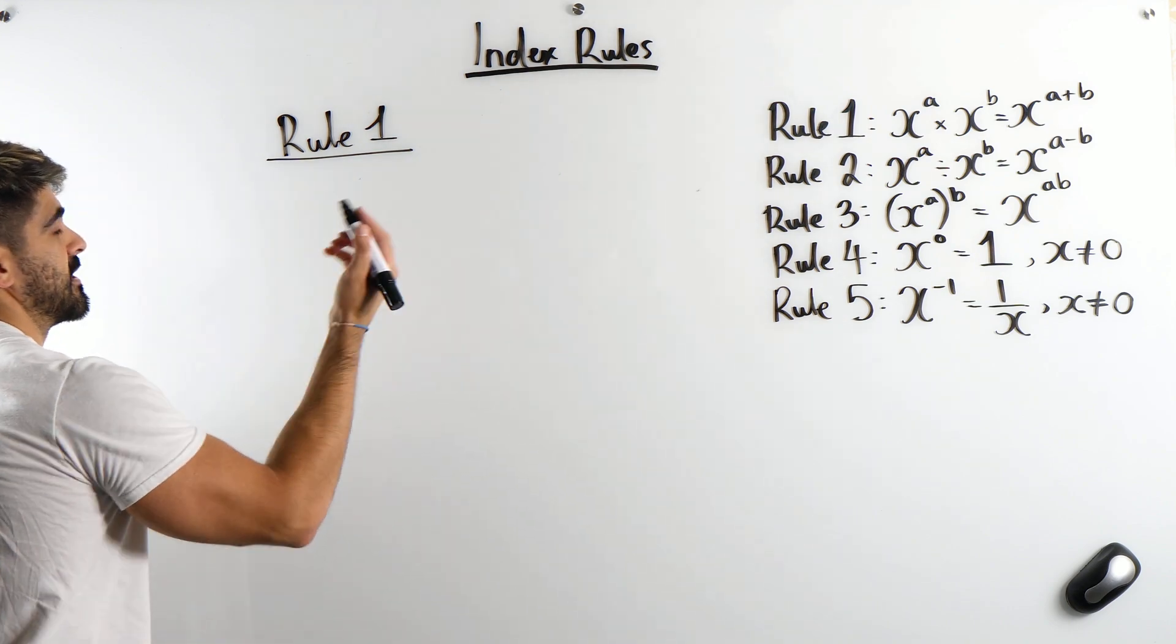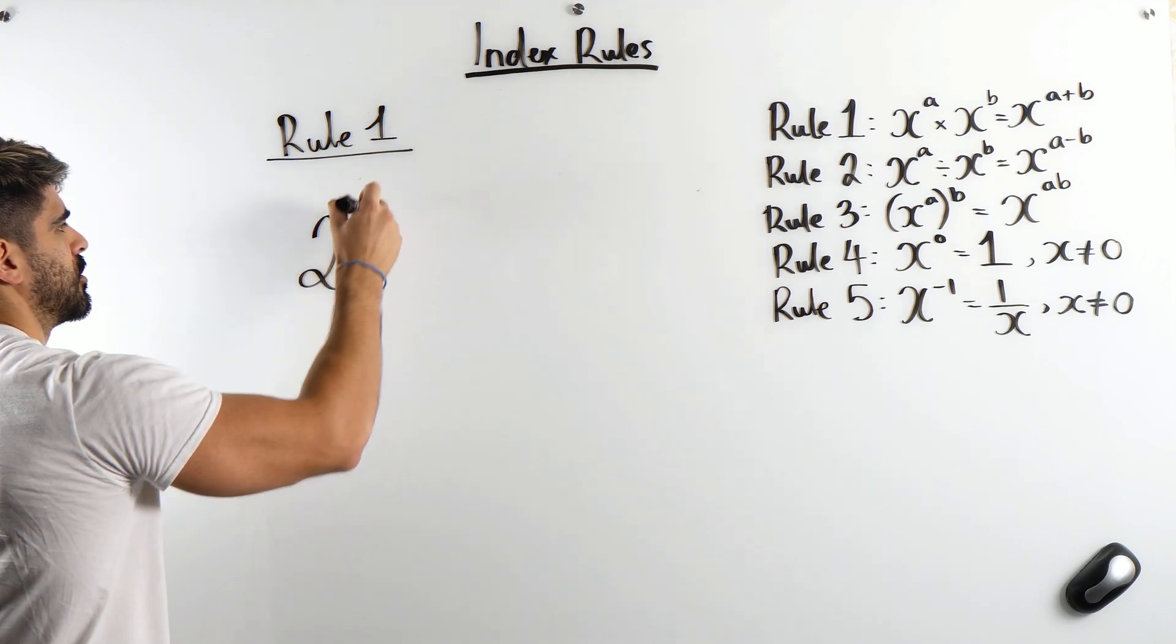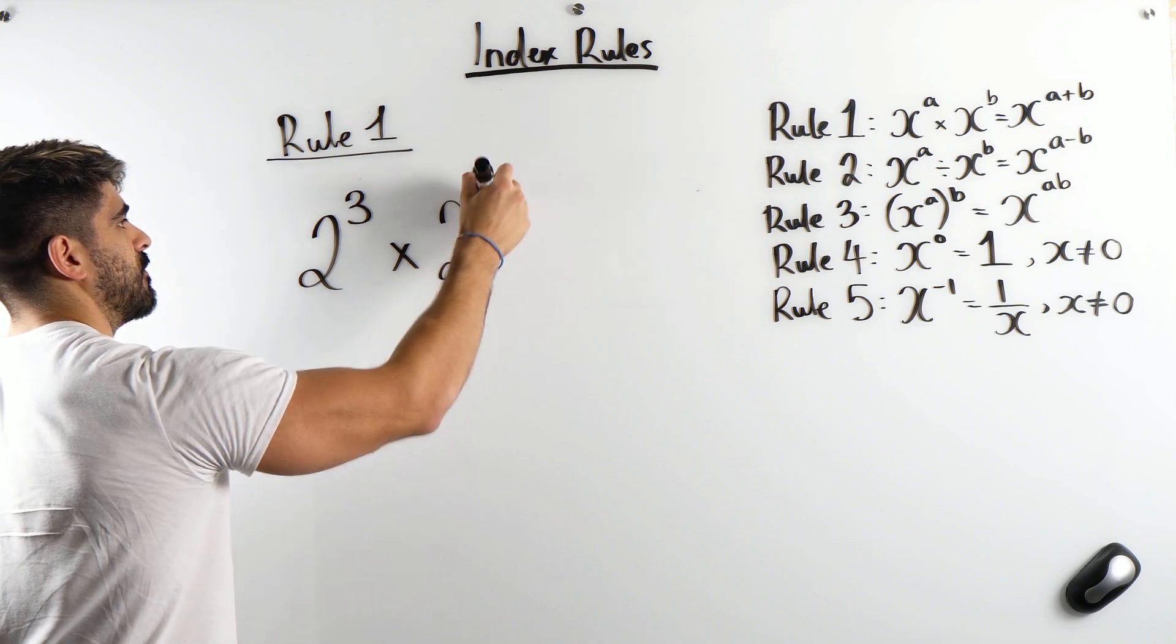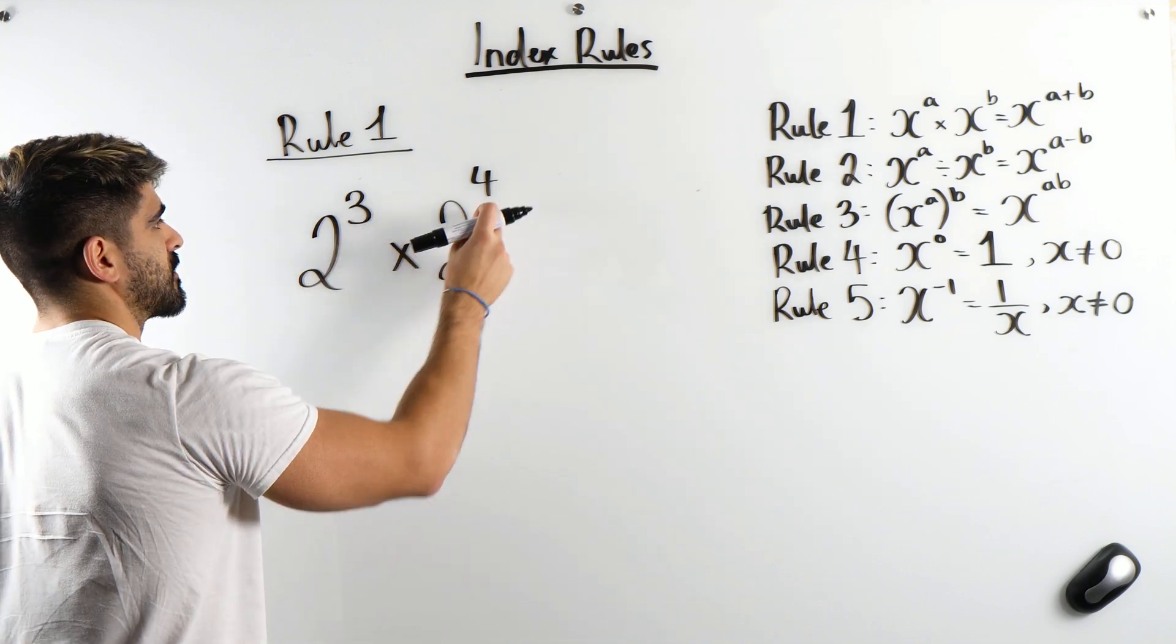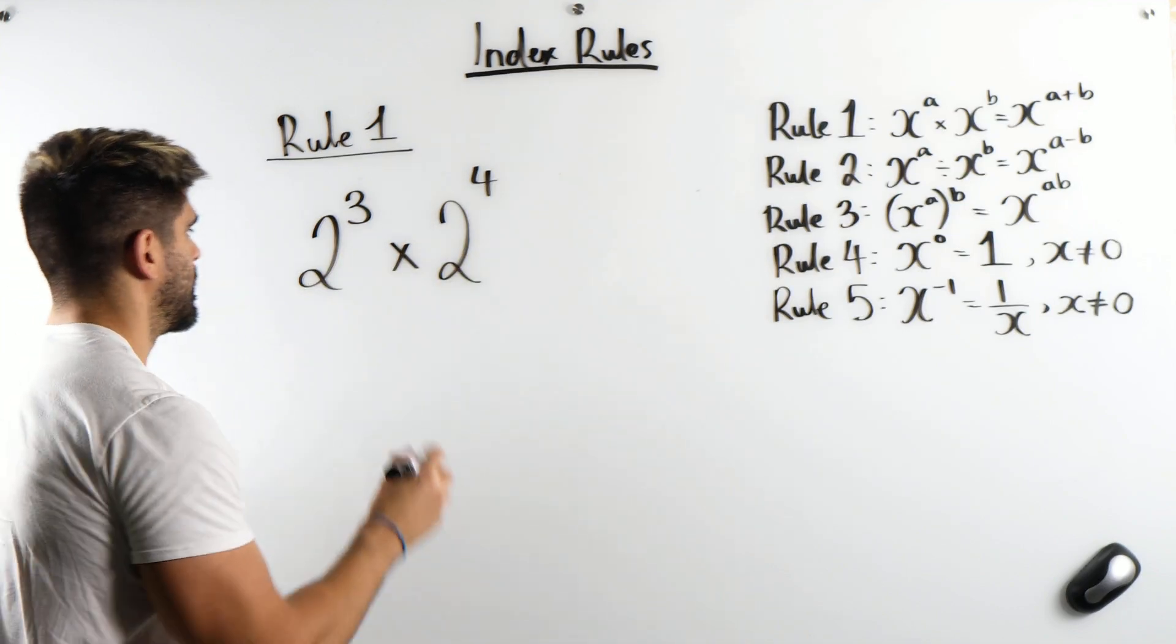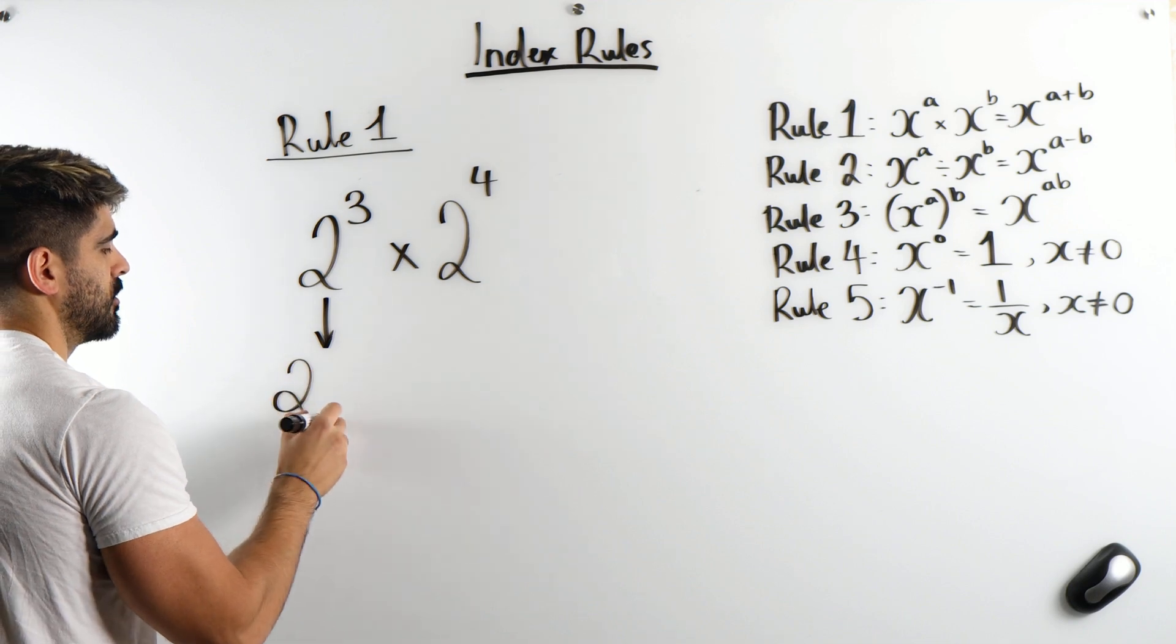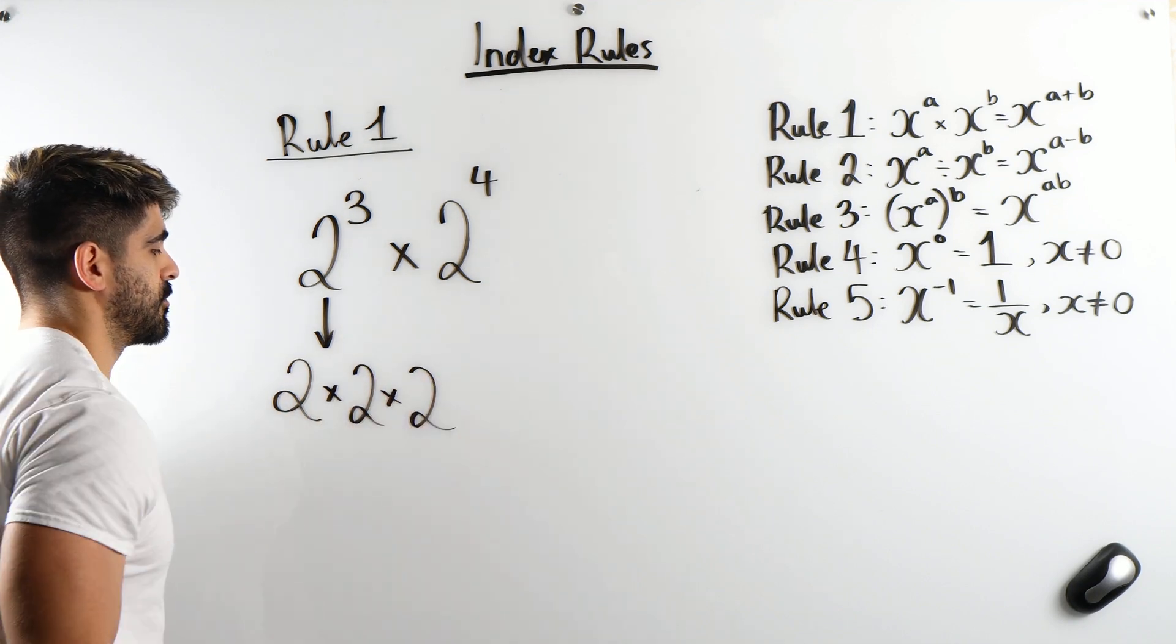Say I want to do 2 cubed times 2 to the power of 4. So you guys should know that we are adding the powers, right? Three plus four will be seven, but why is that? Well, 2 cubed means we're taking the number 2 and we are multiplying it by itself three times.